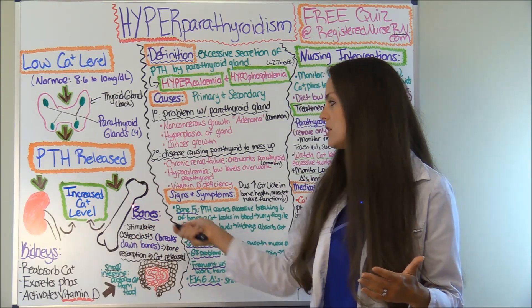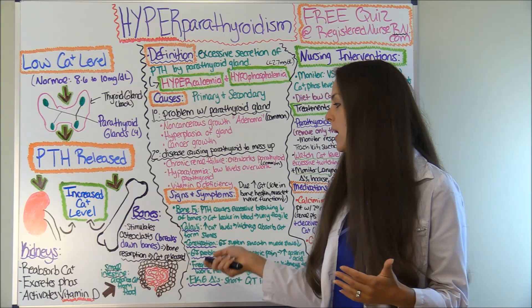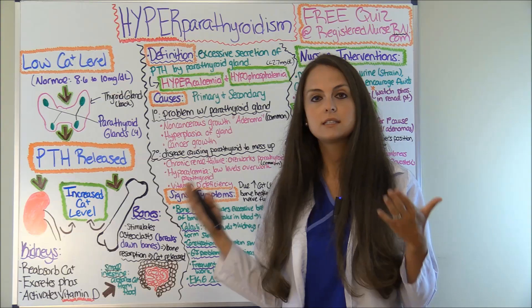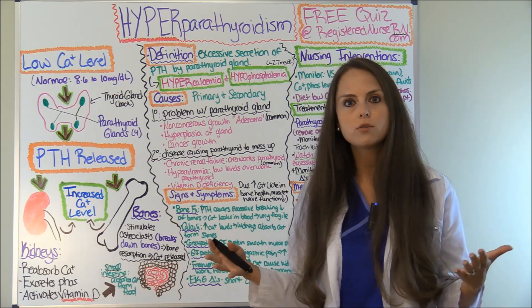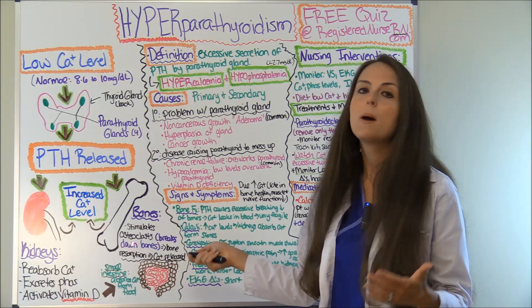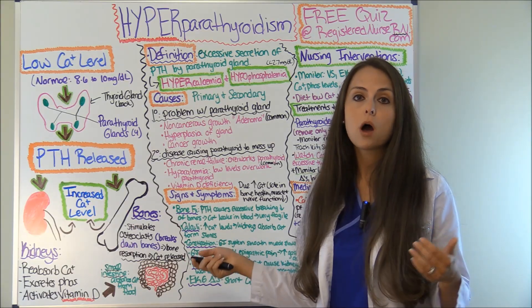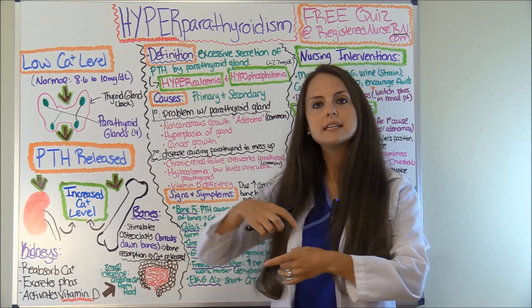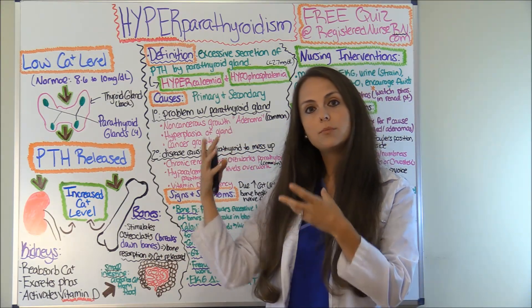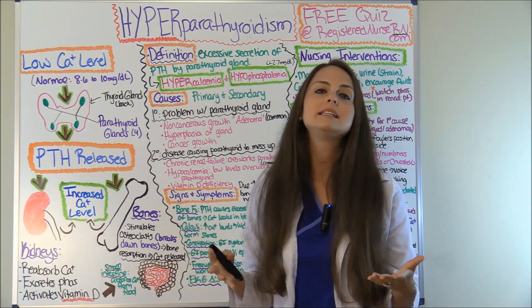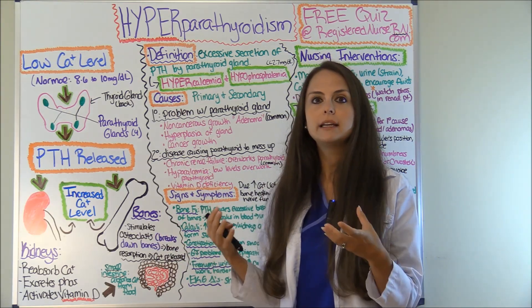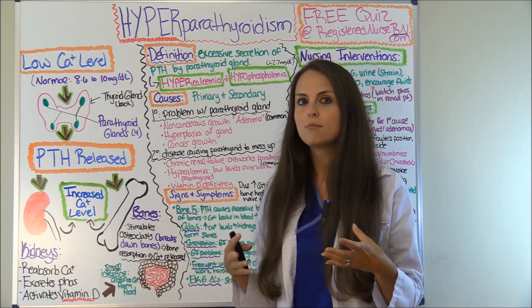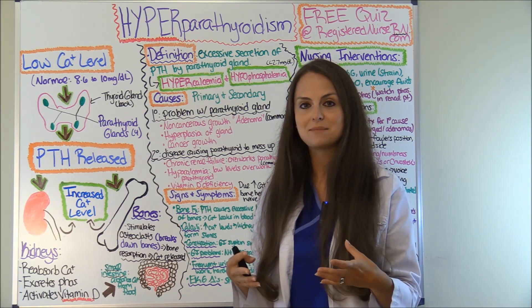Now, how does PTH affect the bones? PTH stimulates osteoclasts in your bones. Osteoclasts break down bones, causing bone resorption, and whenever that happens, calcium is released into the blood. So when you have lots of PTH, your bones are majorly depleting themselves of calcium, and you're going to start seeing some bone problems, which we'll see in the signs and symptoms.